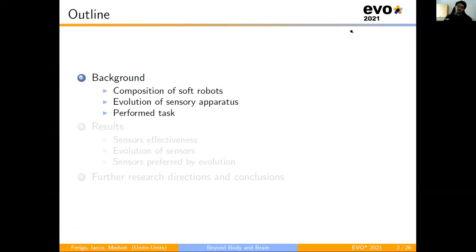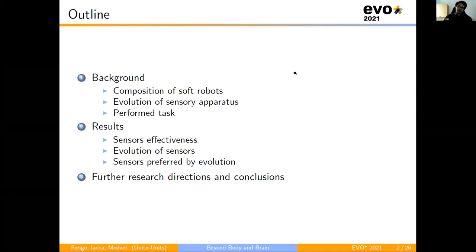Next, we move on to the results section, where we pose three research questions about the sensor effectiveness, the evolution of sensor, and what are the sensors proposed by evolution. Then we move on to the last part, where we talk about the possible further research directions and draw conclusions.